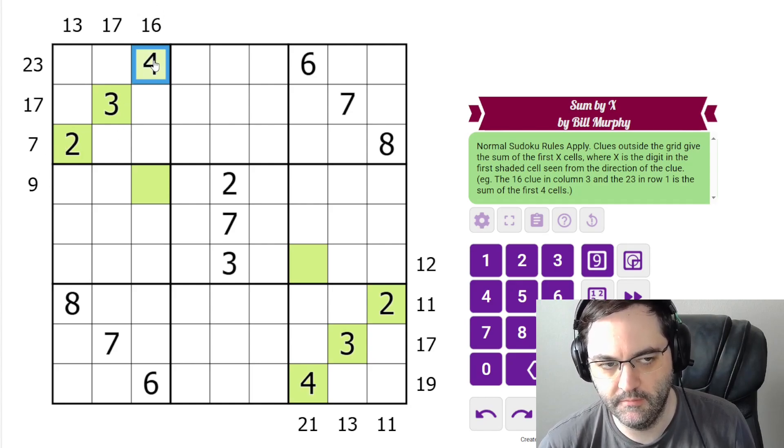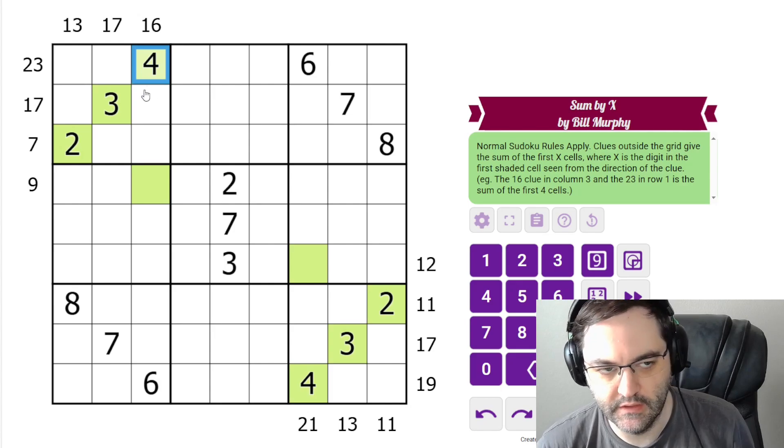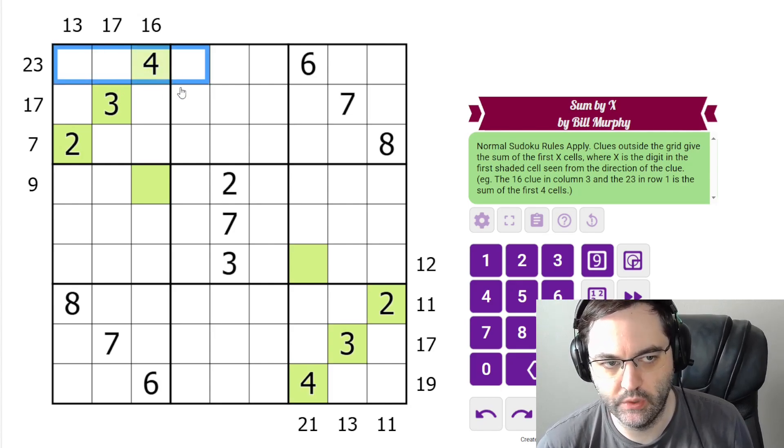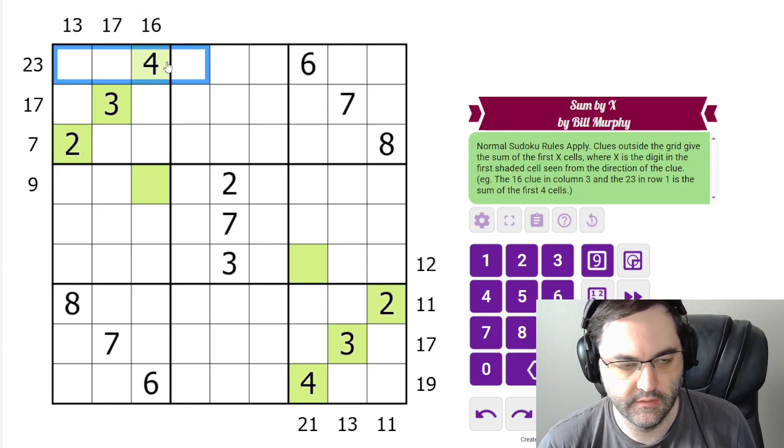You'll notice this 16, there's a shaded cell here with a 4 in it. There's another shaded cell. We only care about this one for the 16 clue. This applies to the 9. Whatever digit is in the shaded cell tells us how many cells we are summing. So this 23 clue, we're summing these 4 cells away from the 23 clue, and we know it's 4 cells because there's a 4 in the first shaded cell.